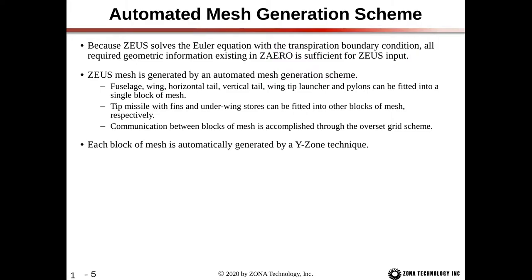The Zeus mesh is generated by an automated mesh generation scheme. The fuselage, wing, horizontal tail, wing tip launcher, and pylons can usually be fitted into a single block of mesh. The vertical tail is usually placed in a separate block. Tip missiles with fins and underwing stores can be fitted into other blocks of mesh, and communication between blocks is accomplished through an overset grid scheme. Each block of mesh is automatically generated by a Y-zone technique.